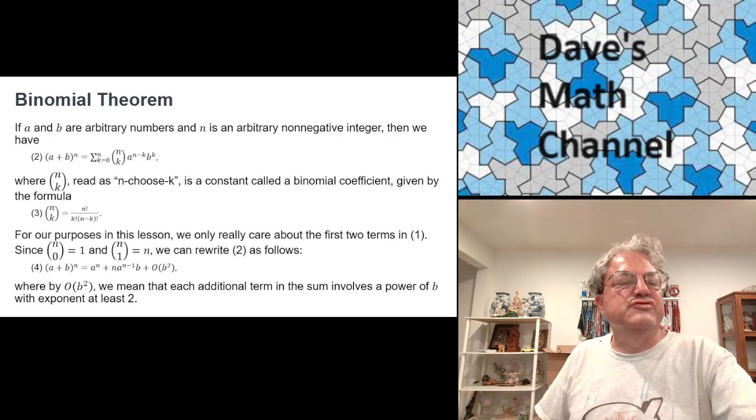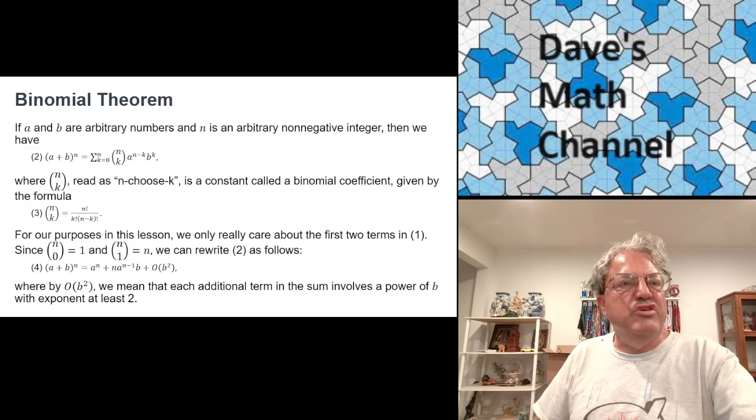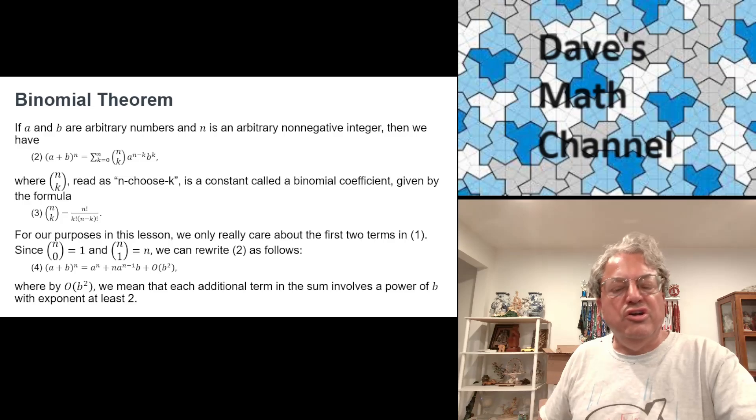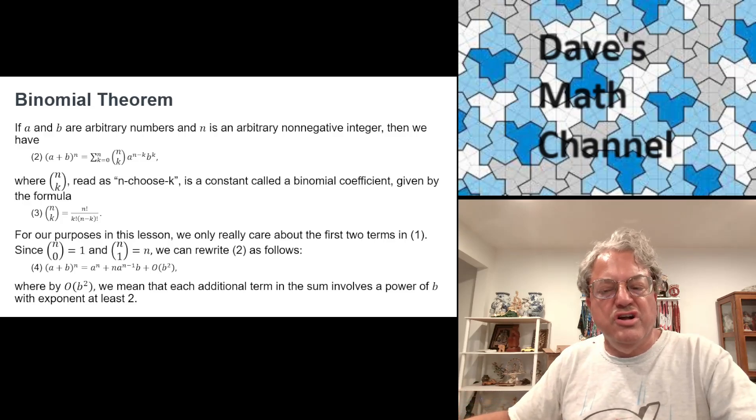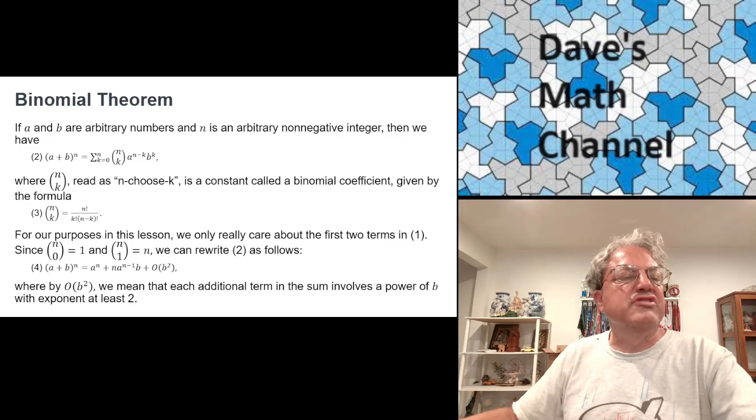You've probably seen this formula before. There are a lot of special cases of this formula. For instance, when n is 2, you just get a squared plus 2ab plus b squared. When n is 3, you get a cubed plus 3a squared b plus 3ab squared plus b cubed, and so on. Another place you've seen these binomial coefficients probably is in Pascal's triangle. They're just the numbers in Pascal's triangle.